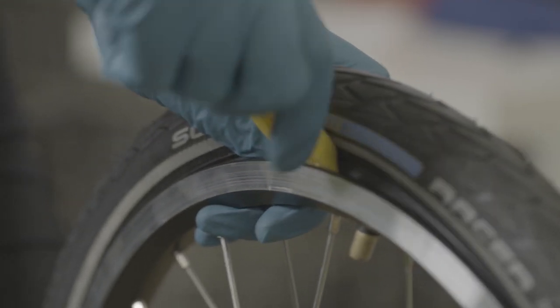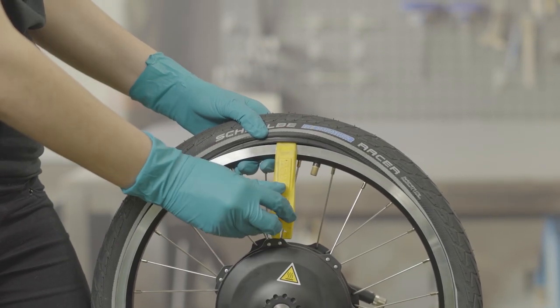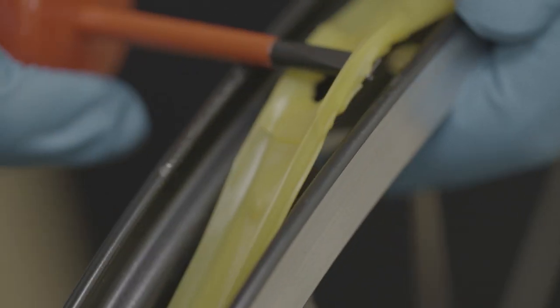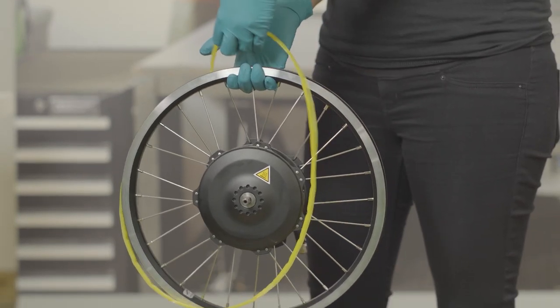Remove the tyre and inner tube. If you do not have a replacement, carefully remove the rim tape. Use a flat-headed screwdriver to lift the tape without tearing it or scratching the rim.